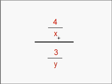Here's an example. We have 4 over x all over 3 over y. The first step in simplifying these complex fractions is to find the lowest common denominator for the two small fractions. So we'll find the lowest common denominator for 4 over x and 3 over y.